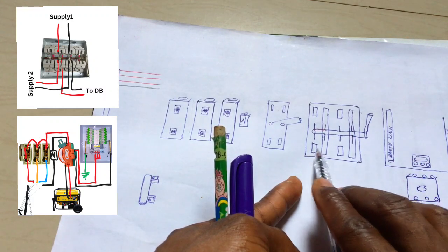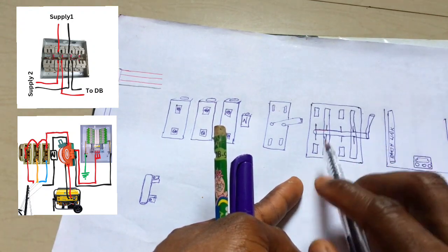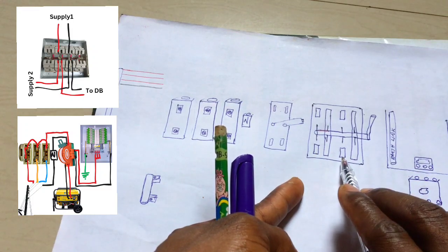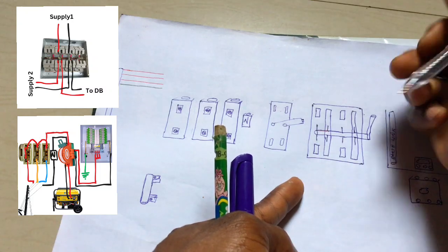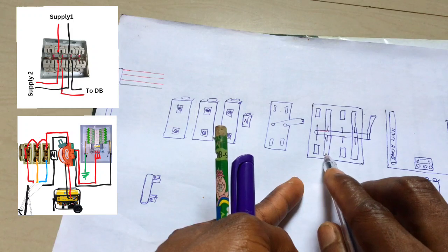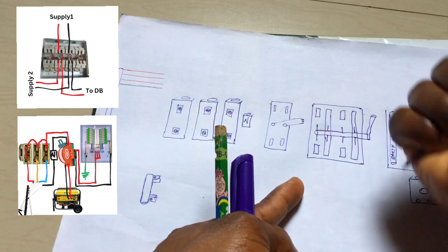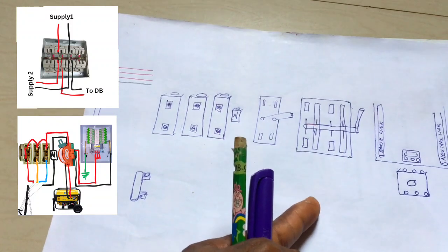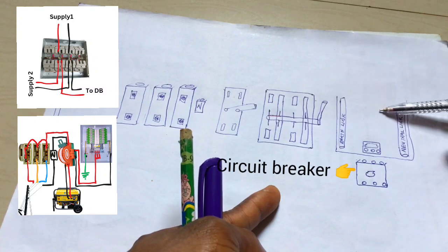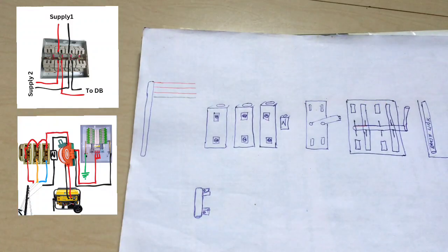If you have power from a generator on the second terminal — input A and input B — you bring the gear down. It conducts live and neutral from the generator's input to your building. You just push the gear to whichever source you have power from. This is a three-phase circuit breaker, and this is our distribution board and its switch.